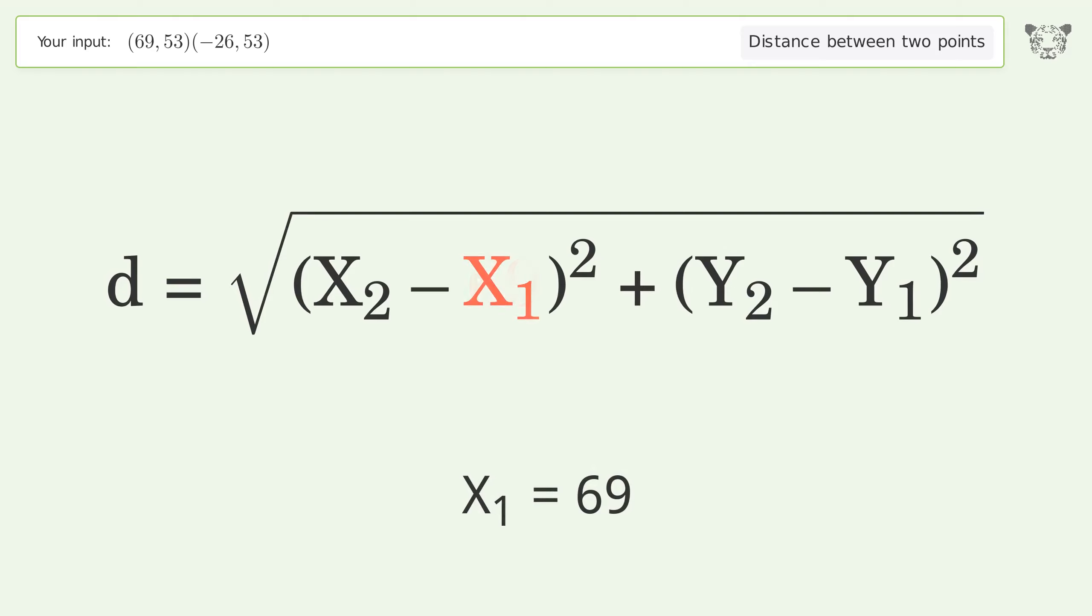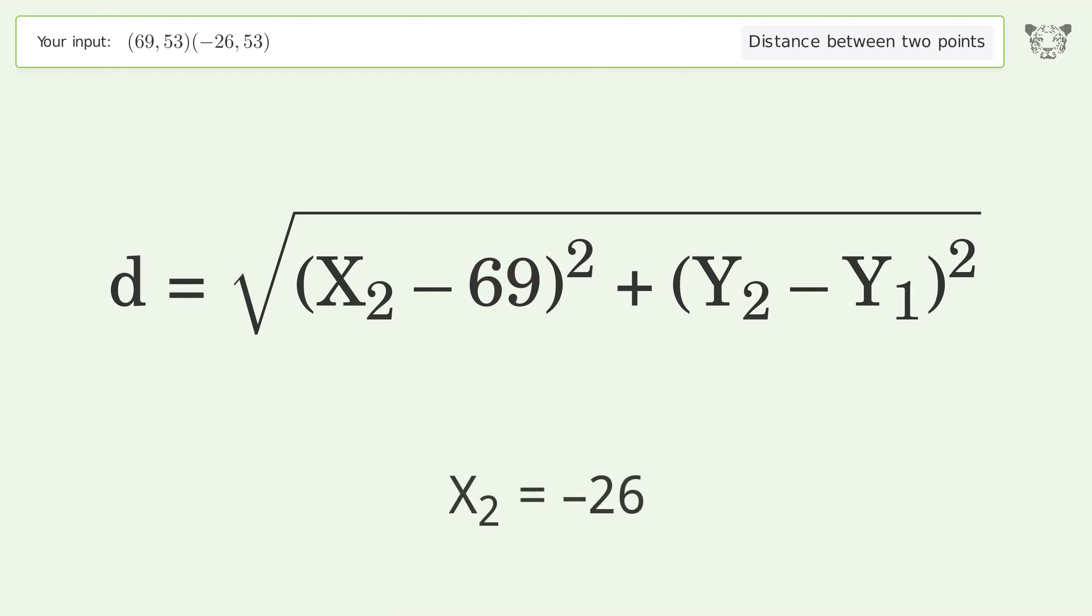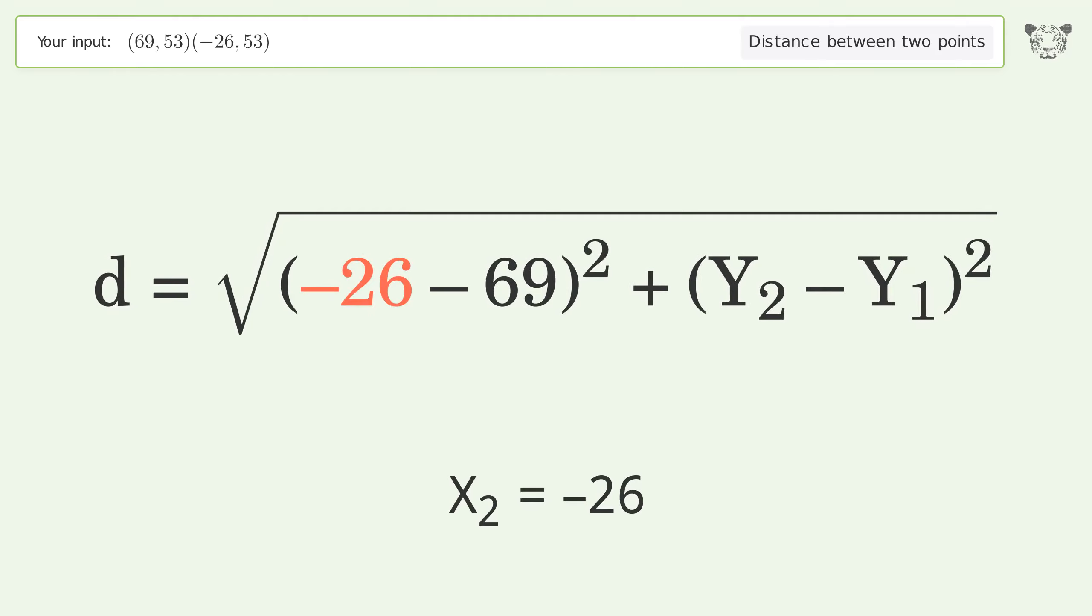Plug the coordinates of the points into the formula. x₁ = 69, x₂ = -26.